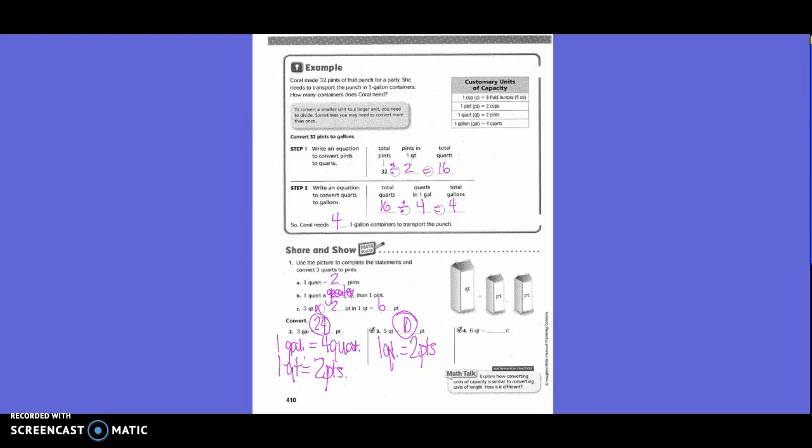Six quarts into cups. Can I go straight from quarts to cups? No. But we do know that one quart equals two pints, and one pint equals two cups. So in this case, I have to take two times two, which is four, times six is 24.